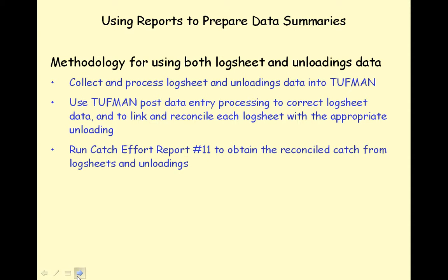The log sheet reported catch in weight should be adjusted to be in line with the unloaded catch weights. This is undertaken within the post entry processing module of Toughman, and users of Toughman must run each process in this module after new data have been entered and before reports are produced. There may be instances where the total unloaded catch number and weight by species is more than the total log sheet trip catch by species. In these instances it is necessary to adjust the log sheet reported catch to match the unloaded catch, and this process is also achieved in the post entry processing module of Toughman. Note that the log sheet data is never adjusted downwards if the unloaded catch is lower than the log sheet reported catch.